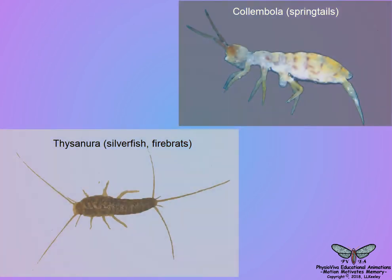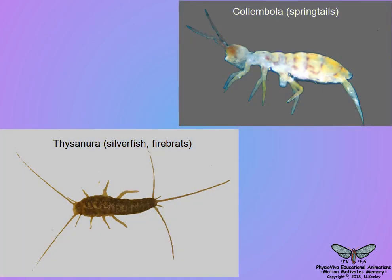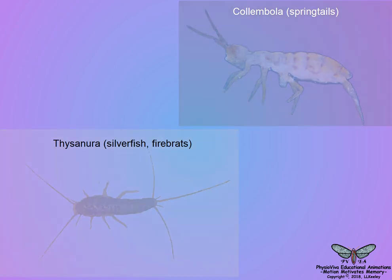The most primitive orders of wingless insects, as illustrated by the springtail and fire brat shown here, all have chewing mouthparts, suggesting that chewing mouthparts constitute the least specialized primitive form.